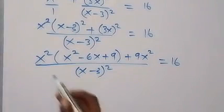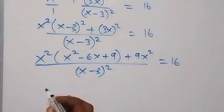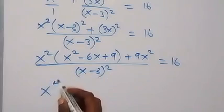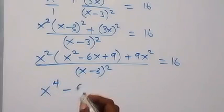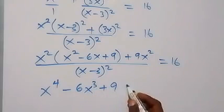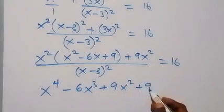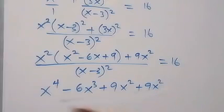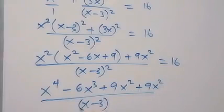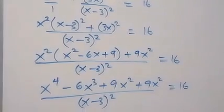We also use x² here to open this bracket, and this becomes x⁴ minus 6x³ plus 9x² plus 9x², divided by (x - 3)², equals 16.